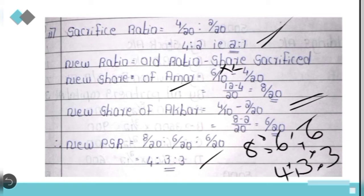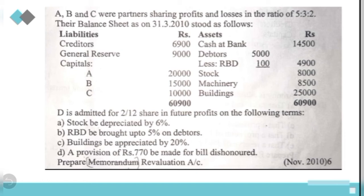Now the third question. A, B, and C were partners sharing profits and losses in the ratio of 5:3:2. Their balance sheet as on 31st March 2010 shows: Cash/Bank 14,500; Debtors 5,000 less RBD 100 = 4,900; Stock 8,000; Machinery 8,500; Buildings 25,000; Creditors 6,900; General Reserve 9,000; and Capitals A, B, C. D is admitted for 2/12 share in future profits. The requirement is to prepare the memorandum revaluation account.